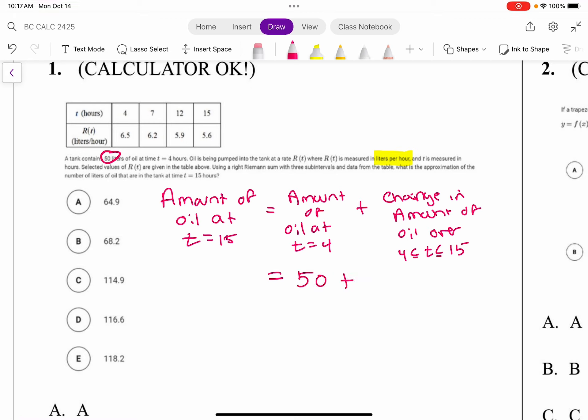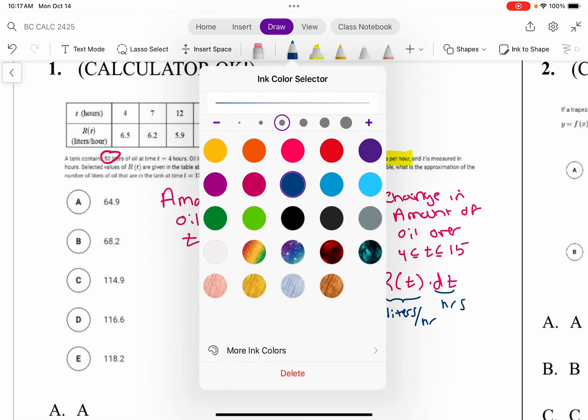And then the change in the amount of oil over that time interval is the integral from 4 to 15 of r(t) dt. Look, just check units, right? So this is liters per hour